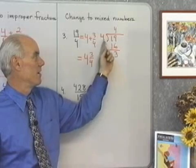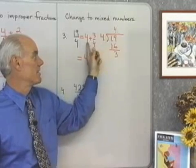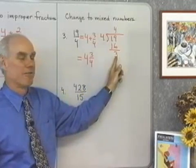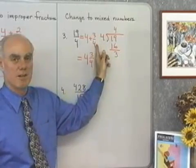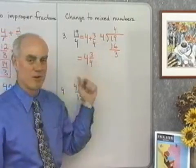This division right here helps me do that. 4 divides into 19 four times, that's that 4. And then, I have a remainder of 3 or 3/4 right here. So, 4 plus 3/4 is 4 and 3/4.